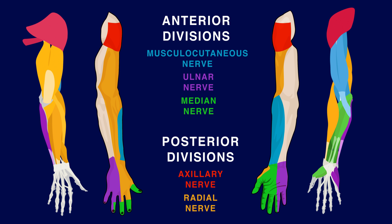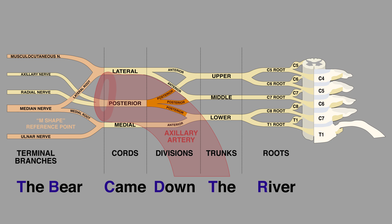These have different functionality. The anterior divisions supply the anterior part of the upper limb, while the posterior divisions supply the posterior part of the upper limb. The three posterior divisions fuse to form the posterior cord. The anterior divisions of the upper and middle trunks fuse to form the lateral cord. The medial cord is a continuation of the anterior division of the lower trunk.